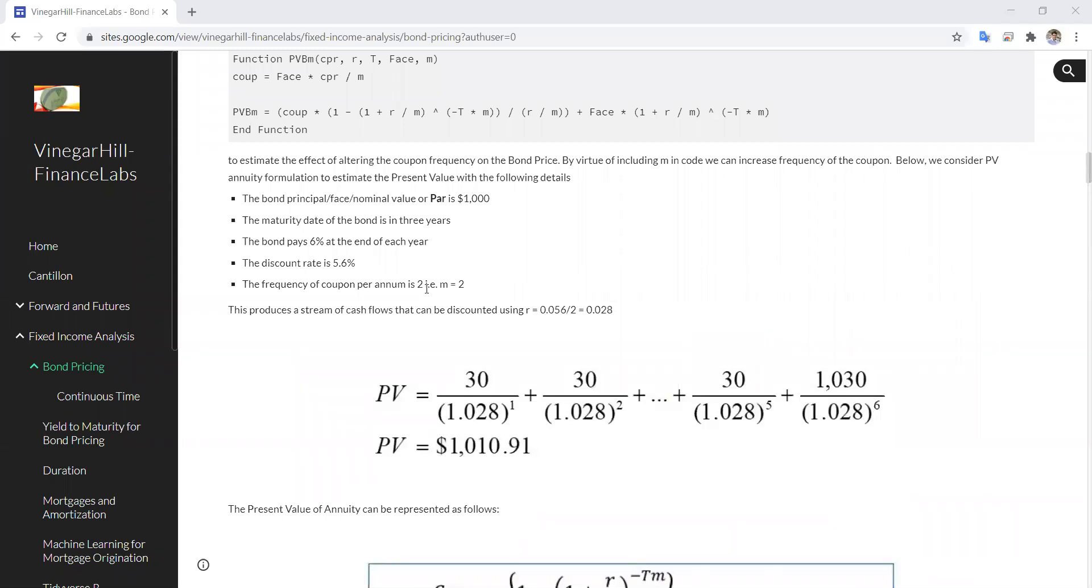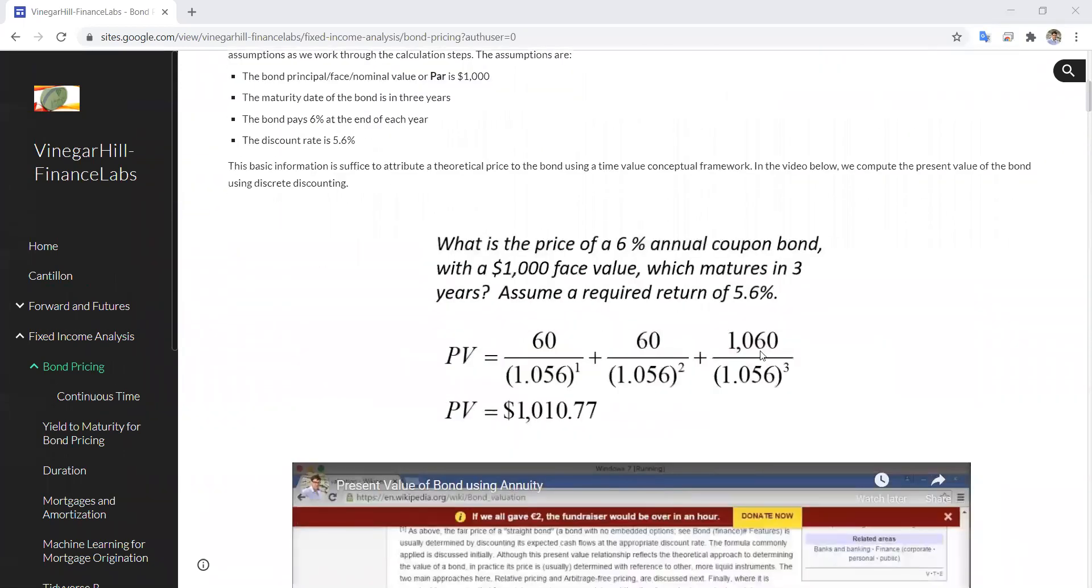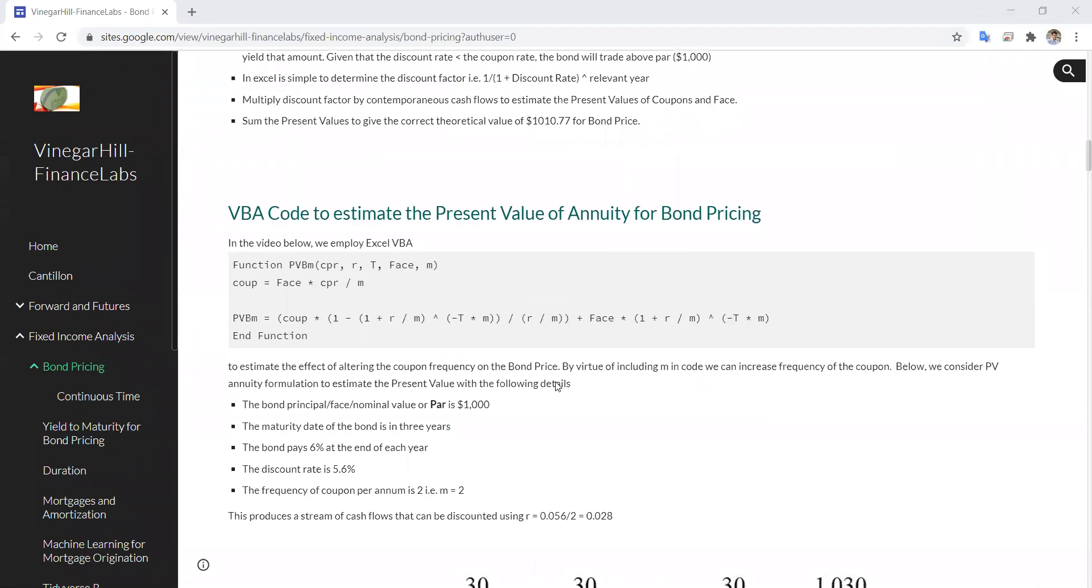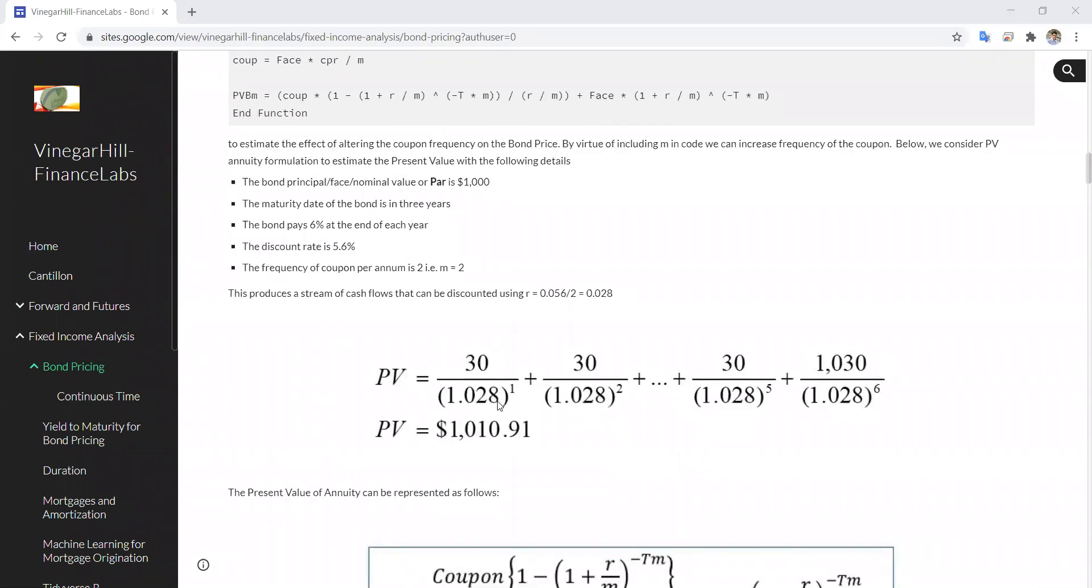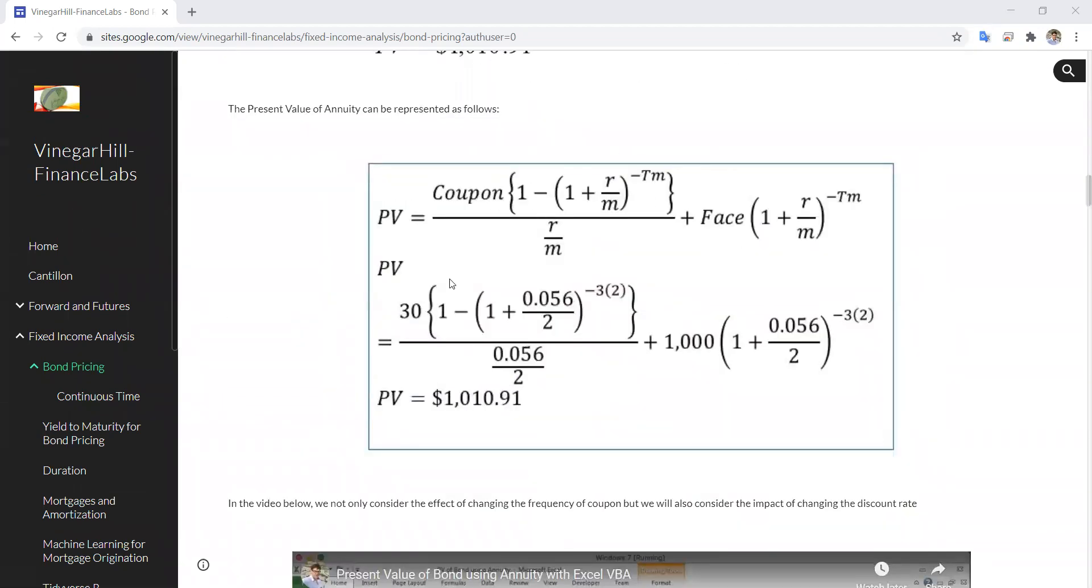We're going to have a higher frequency of 2 coupons per year. So instead of having a payoff over a 3-year term, we have coupons of 30 every 6 months and the interest rate is divided by 2 so that we get 2.8% as opposed to 5.6%. We've done this estimation.